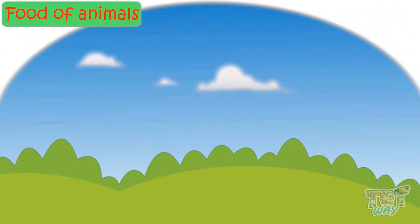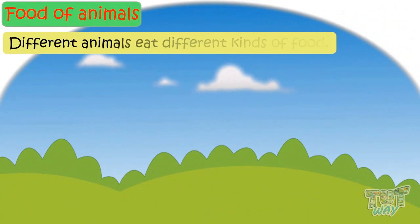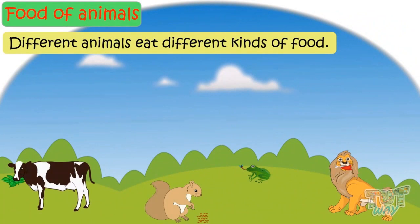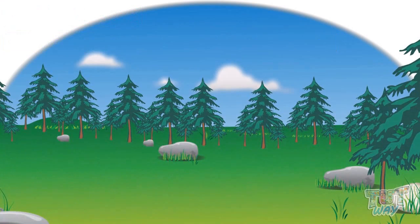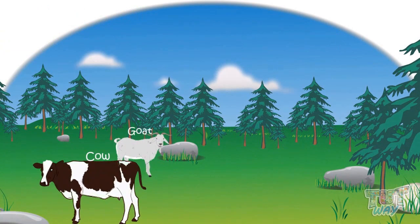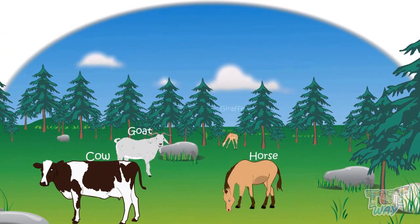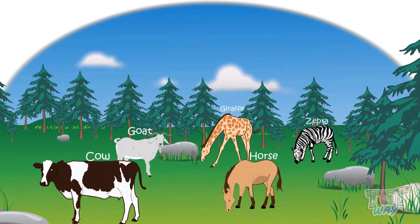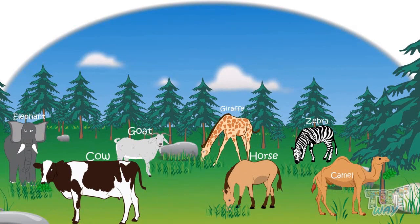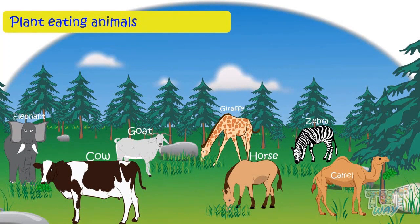Different animals eat different kinds of food. Animals like cows, goats, horses, giraffes, zebras, camels, and elephants eat grass, leaves, and other parts of green plants. These animals are called plant-eating animals, and they are also called herbivores.